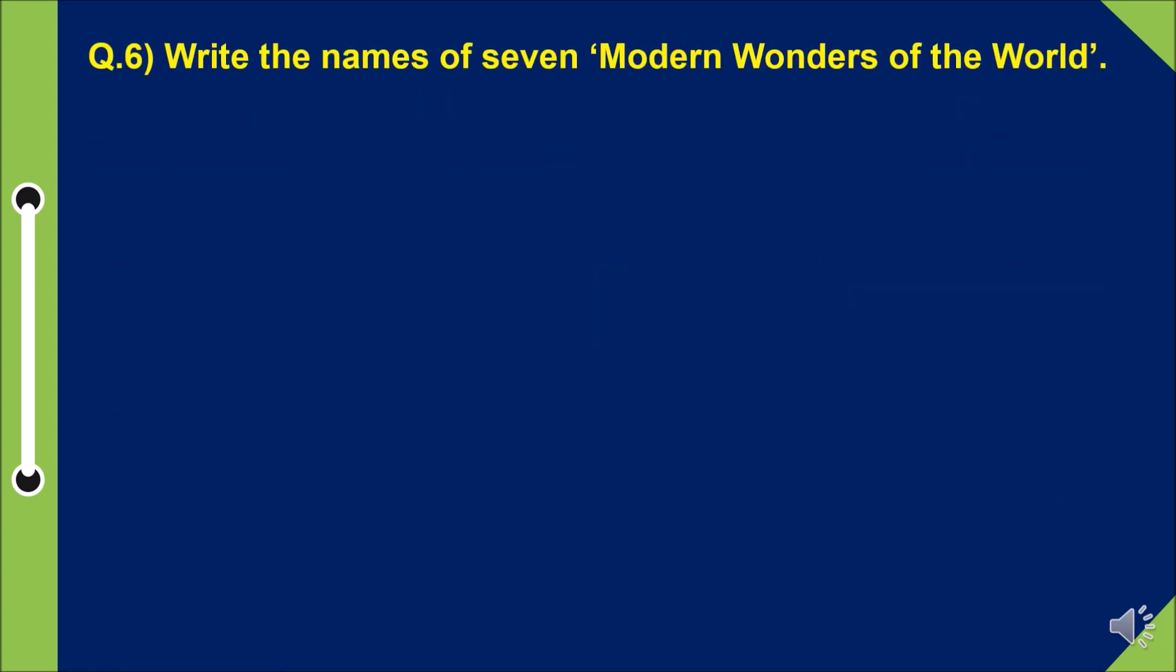Question six, write the names of seven modern wonders of the world. Answer: number one, Taj Mahal. Taj Mahal is in India.